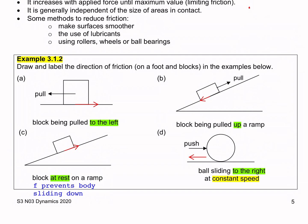Example d: The ball is sliding to the right at a constant speed. To oppose the motion of the ball, the frictional force will be opposite to it. This frictional force will be equal in magnitude to the push so that the net force is zero, hence the speed will be constant with no acceleration.